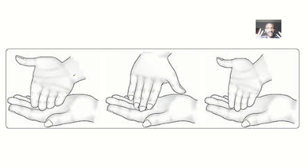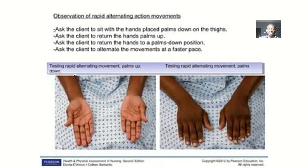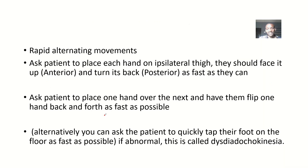There are two ways you can do the rapid hand test. In the first type, the person holds their hand up and turns it as fast as they can. In the second type, the person places their hand on their lap and turns it up and down as fast as possible. That's the rapid alternating hand movement test.